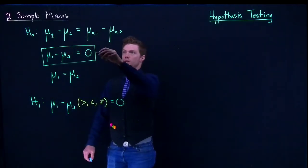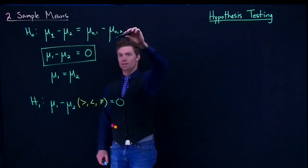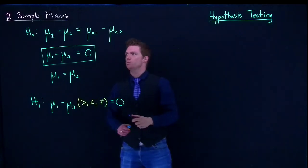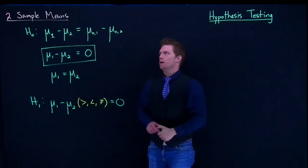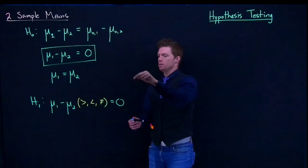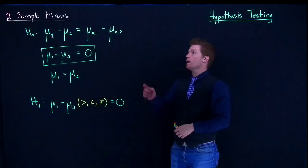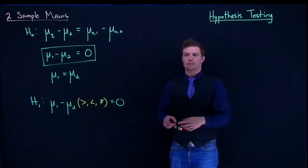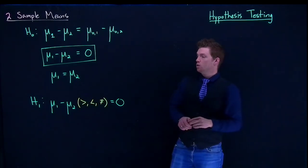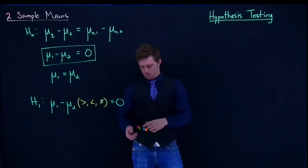And once again, I'm just going to put in zero here, because this is what we are typically going to see. Now we can, if we think that there's a specific difference between two things, we can have that. But most of the time, it's just going to be zero. So now that we've got our two sample means, let's take a second and we will look at our two sample proportions.